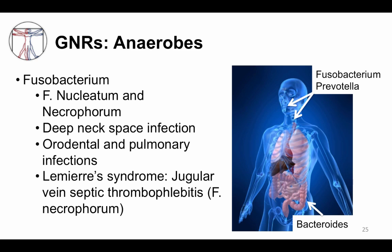Above the diaphragm anaerobes include Fusobacterium and Prevotella. There are two common types of Fusobacterium: F. nucleatum and F. necrophorum. These are commonly implicated in deep neck space infections, orodental, and pulmonary infections. Lemierre syndrome is one testable syndrome and a great diagnosis to make. Patients are often quite ill due to an infected clot in the jugular vein, classically associated with F. necrophorum. This concludes a whirlwind overview of gram-negative rods, many of which you'll learn about in more depth in other modules. Thanks so much for watching.